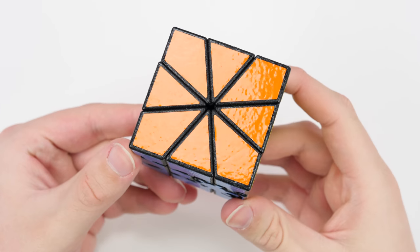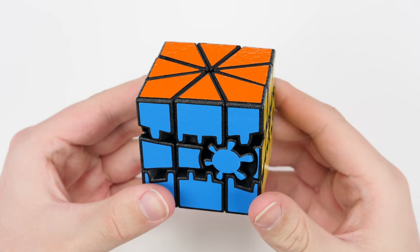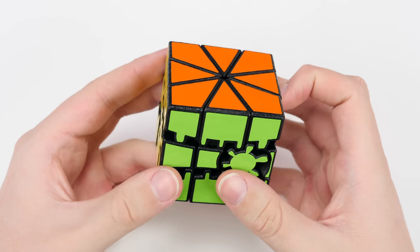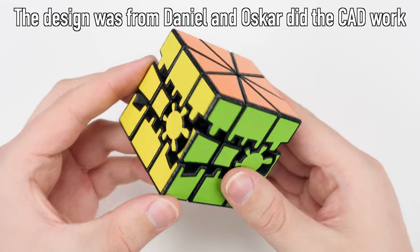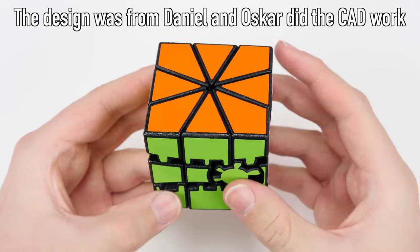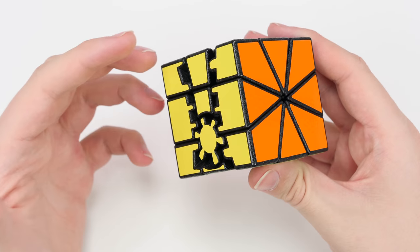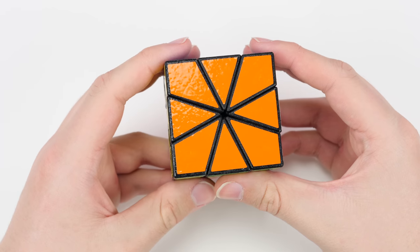So here is the puzzle. This is the Gear 1. This is a 3D printed puzzle. It was designed by Daniel from Ucube and it was printed by Oscar van Deventer. But basically this is a geared version of the square one.